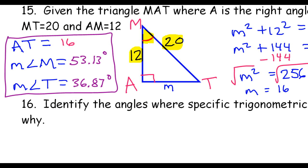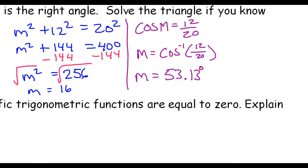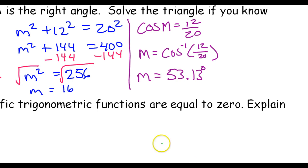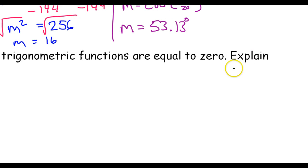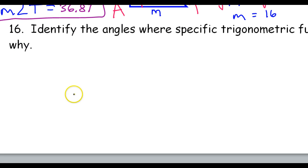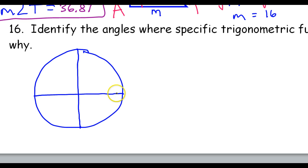For the last problem, number 16, we're supposed to identify the angles where specific trig functions are equal to zero. Let's find all the angles where any trig function equals zero. Let's draw a unit circle and go in order. Zero is going to be a possibility when we're dealing with multiples of pi over 2 — so all answers are going to be pi over 2, pi, 3 pi over 2, 2 pi, or zero.